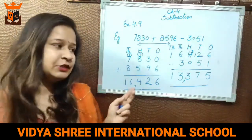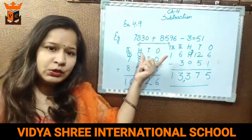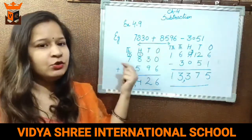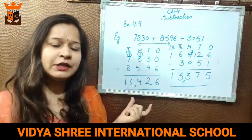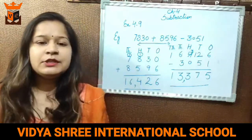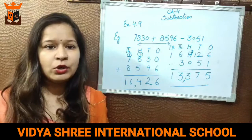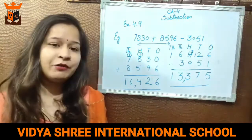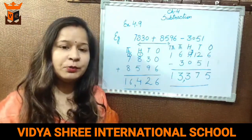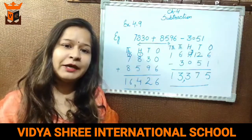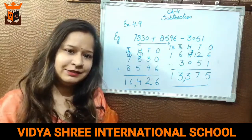So students, as you can see, it's a very easy concept. Firstly, you have to add the 2 numbers, then you have to subtract the 3rd number from the sum of the given numbers. Do exercise 4.9 in your notebook only, because you have to do these sums in your homework notebook. Till then, goodbye — take care and do your homework properly, neat and clean.